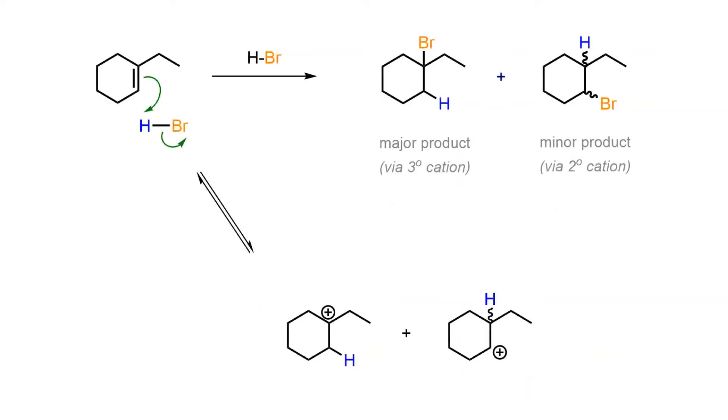The first step, the formation of the carbocation, is rate determining. Here, protonation may occur at either carbons and at either face of the alkene to produce the six-electron tertiary and secondary carbocations.